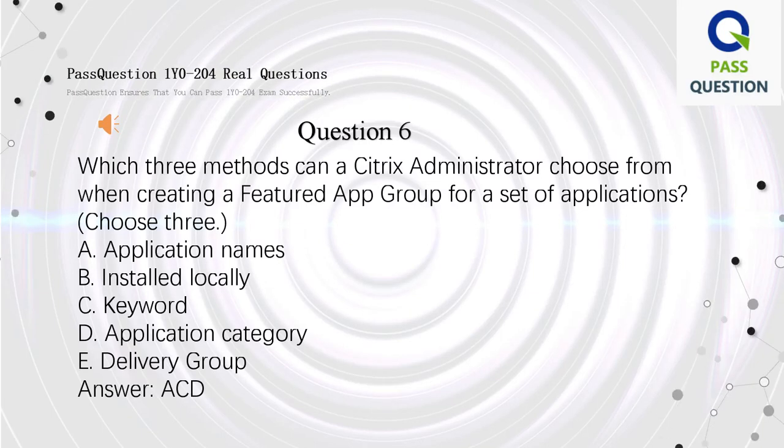Question 6. Which three methods can a Citrix Administrator choose from when creating a featured app group for a set of applications? Choose three. A. Application Names. B. Installed Locally. C. Keyword. D. Application Category. E. Delivery Group. Answer: A, C, D.